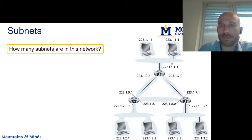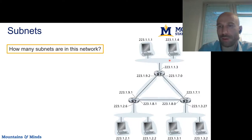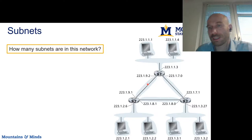Just for practice — how many subnets are in this network? We can count them. We have some addresses here that connect without a router, some addresses here that share an address space without a router, and same here — that's three. But these router interfaces also share IP addresses with no router in between them. So we have one, two, three, four, five, six subnets in this network.